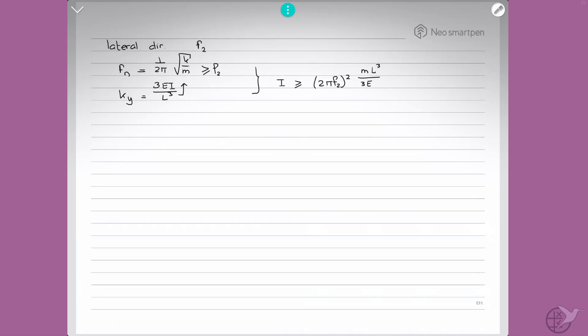Now, the moment of inertia for bending is equal to π R cubed T, and if we substitute that into there and rework that for T, what we find is that our minimum wall thickness has to be larger or equal to 4 over 3π times F2 squared times ML cubed over ER cubed.